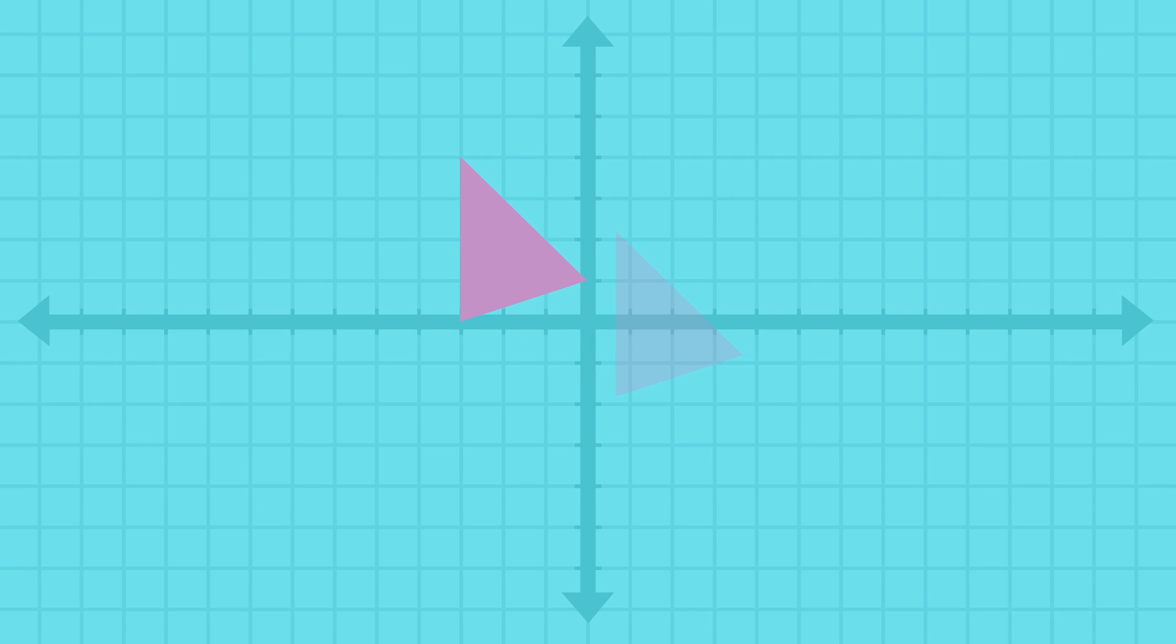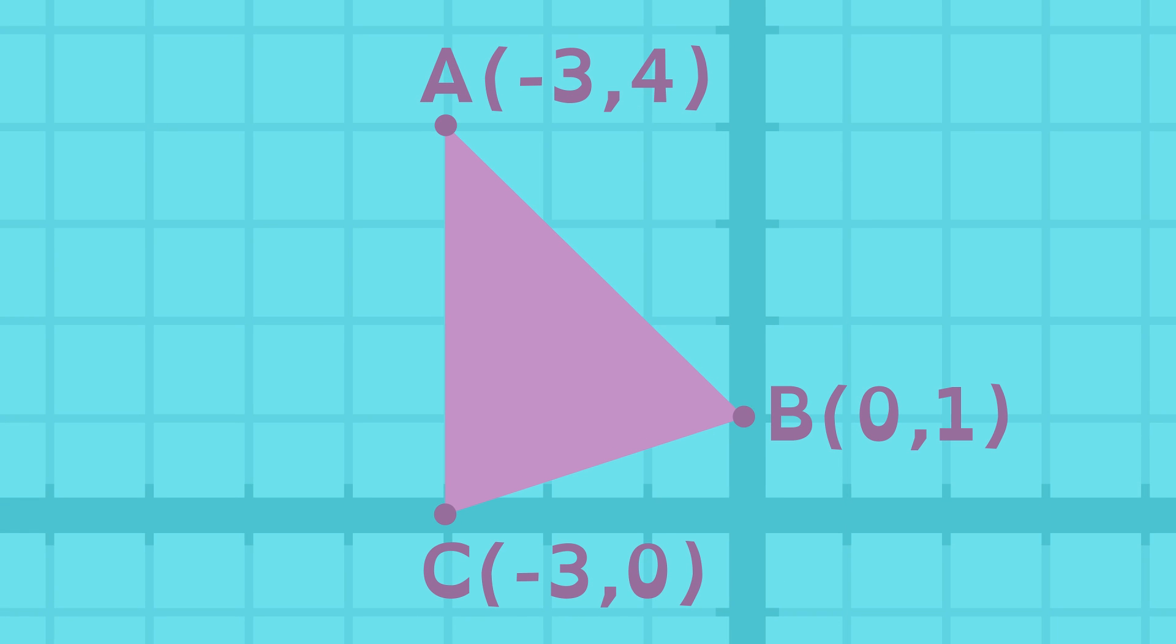Say we want to move this triangle to another location on a coordinate plane. First, we name the ordered pair for each of the shape's vertices.